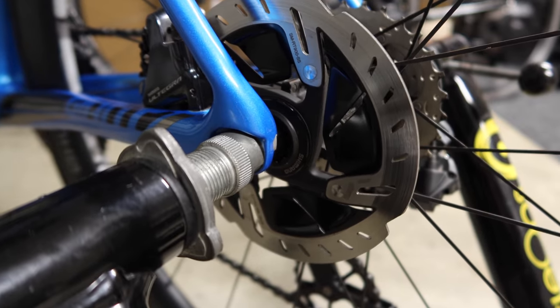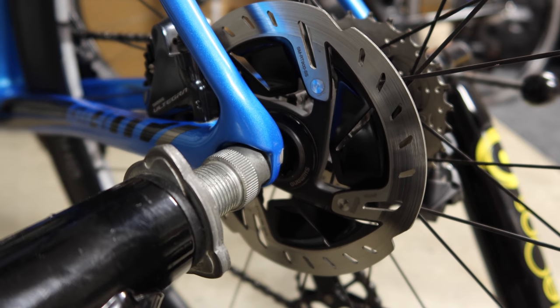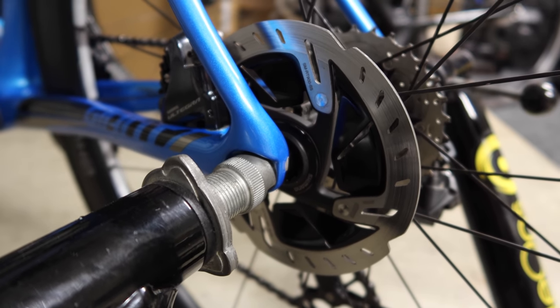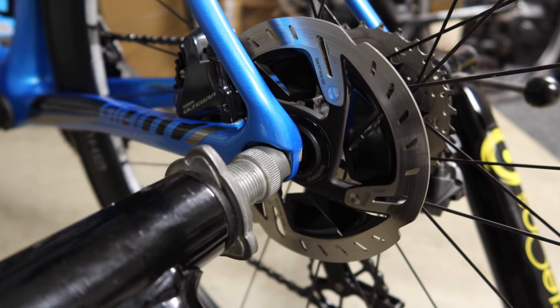When using a wheel on trainer, it's important that the clamping mechanism doesn't push up against the frame. With this, it's close but just enough gap to make it work.